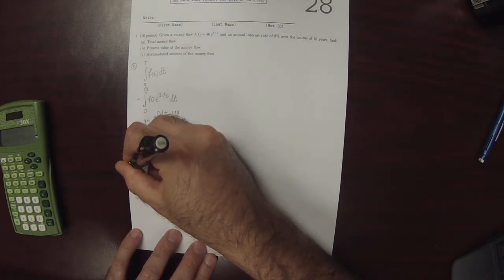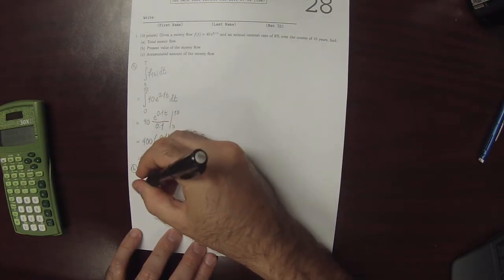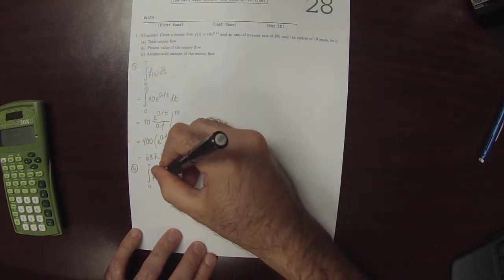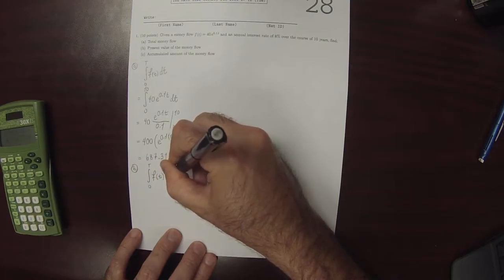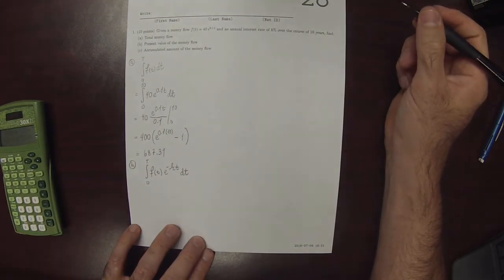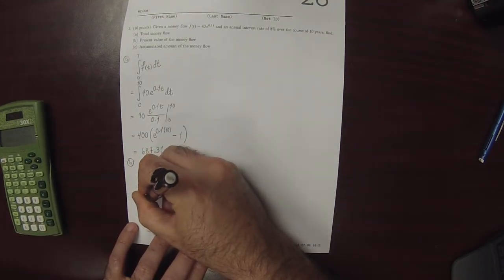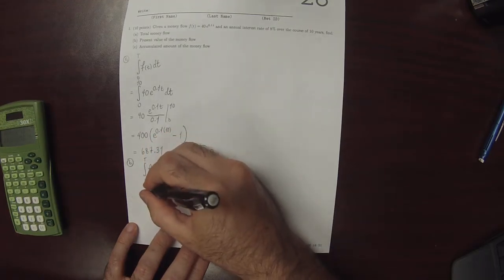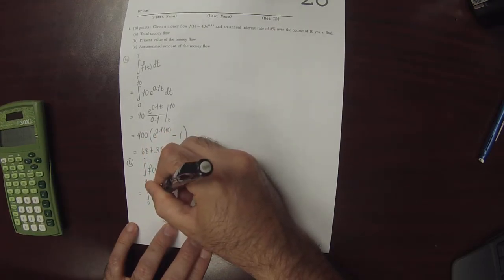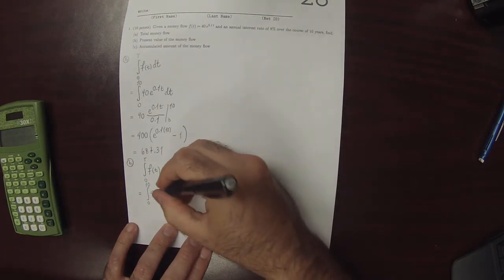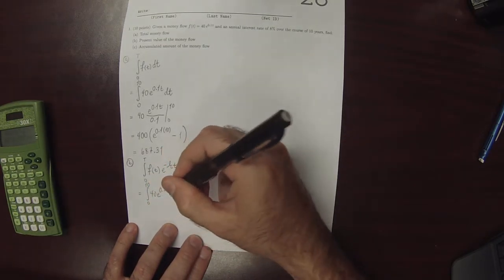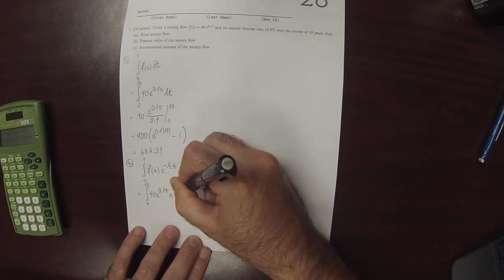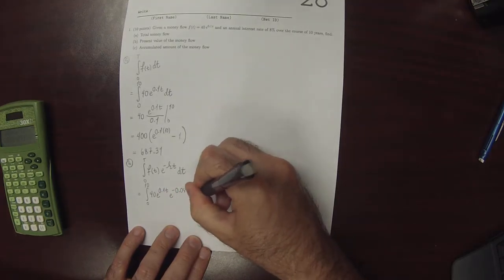Part B. The formula here is integral 0 to big T of the money flow times exponential negative r little t, dt. And on this particular exercise, that means integral 0 to 10 of 40 exponential 0.1 T and then exponential negative 0.08 T, dt.